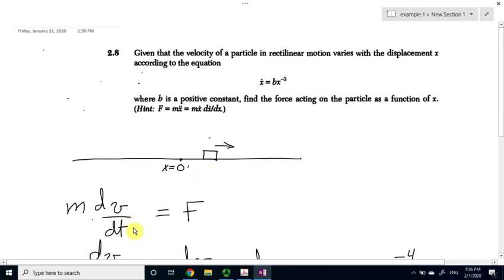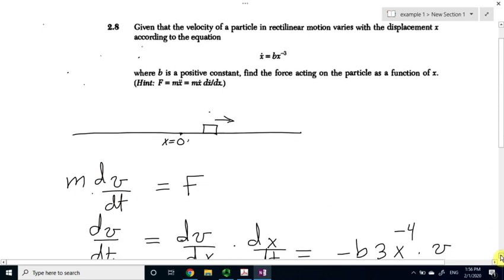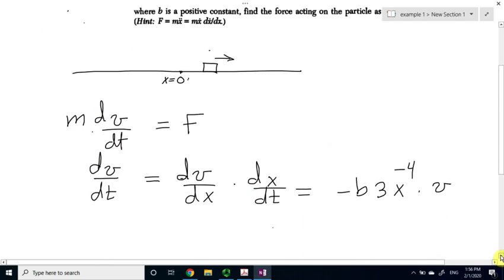Now, the acceleration of the object is dv by dt. Because the velocity is given as a function of x, and according to the hint, instead of finding the derivative with respect to t, we're going to use the calculus chain rule, saying that dv by dt can be written as dv by dx times dx by dt.